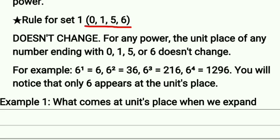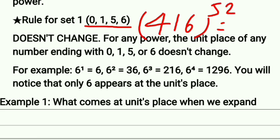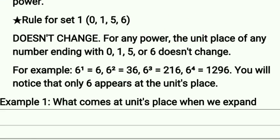The speciality of these digits is that whenever you see them at the unit place, they remain the same no matter what the power is. For example, 6^1 is 6, 6^2 is 36 (unit digit 6), 6^3 is 216 (unit digit 6), 6^4 is 1296 (unit digit 6). So whenever you have 6 at the unit place, it's always going to be 6. The same applies to 0, 1, and 5 — their unit digits always remain the same.